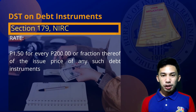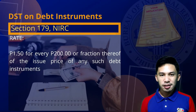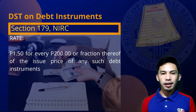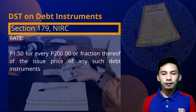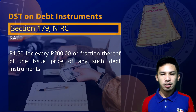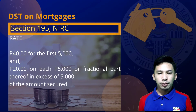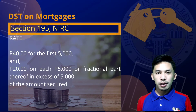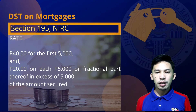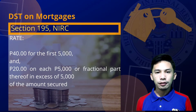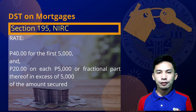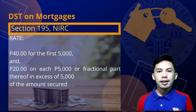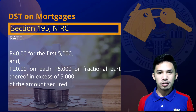On every original issue of debt instruments, there shall be collected a DST of 1.50 pesos for every 200 pesos or fractional part thereof of the issue price of such instrument. On every mortgage, 40 pesos for the first 5,000 pesos or fractional part thereof, and an additional 20 pesos for every 5,000 pesos or fractional part thereof in excess of the first 5,000 pesos.